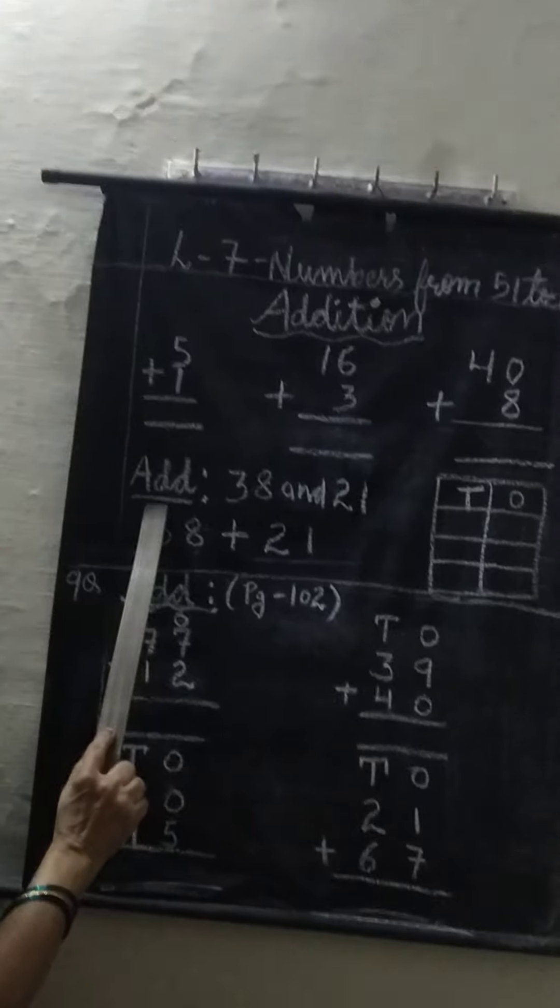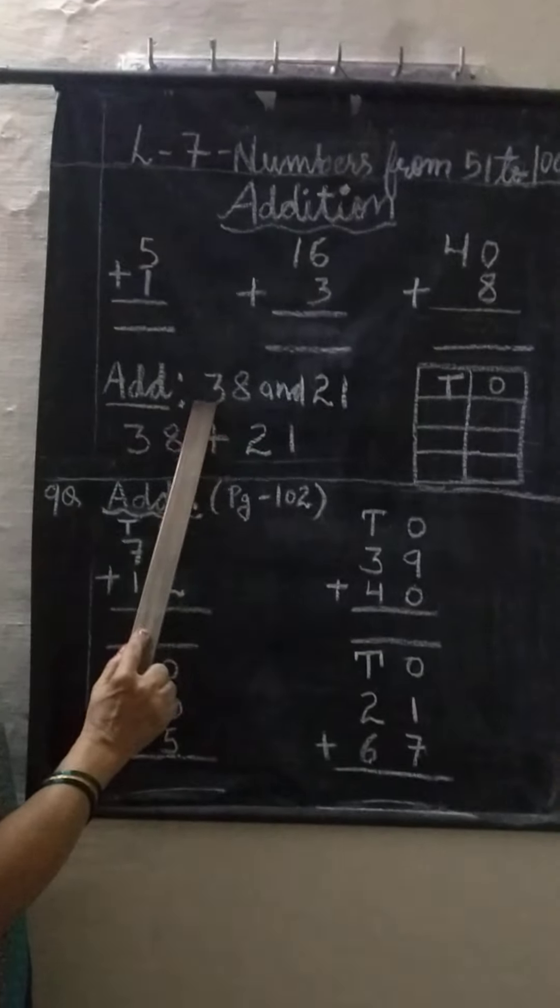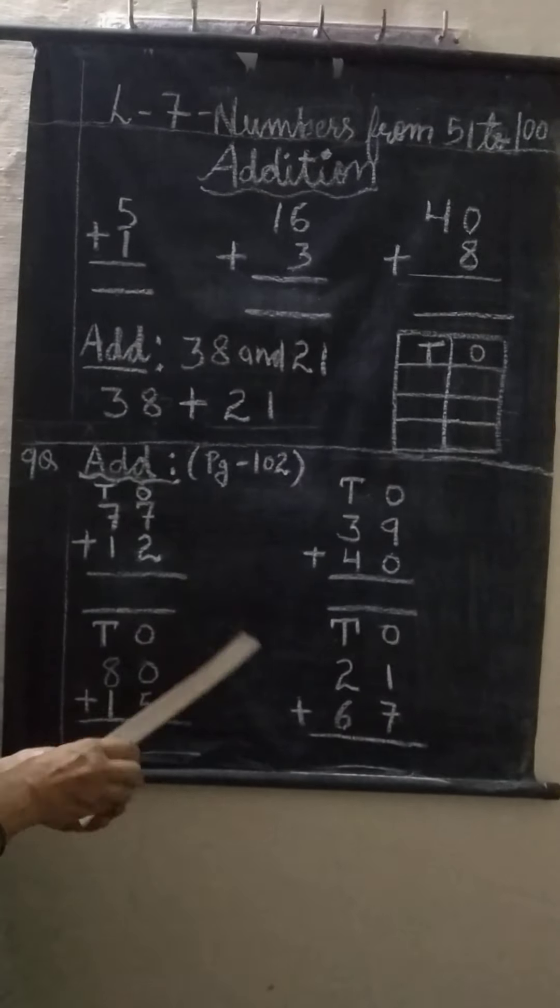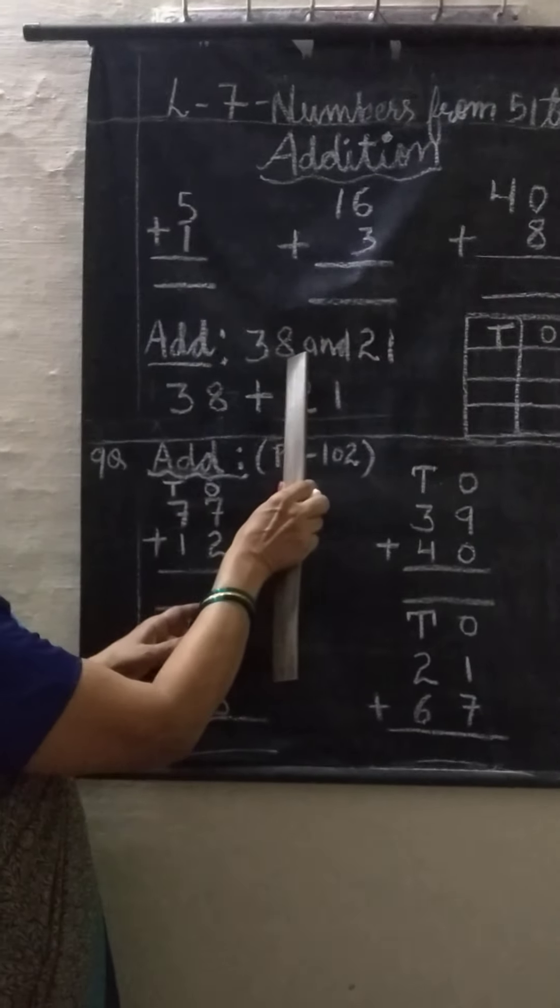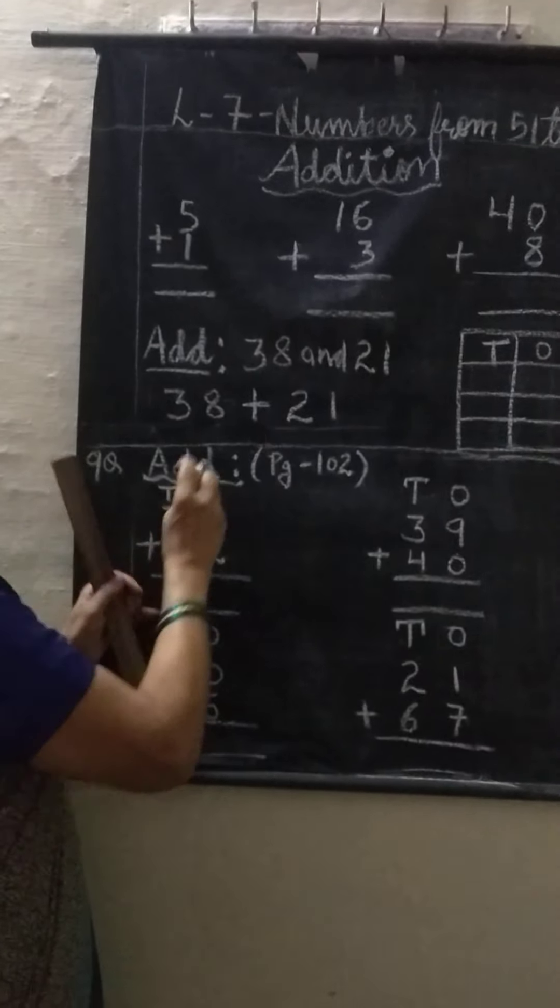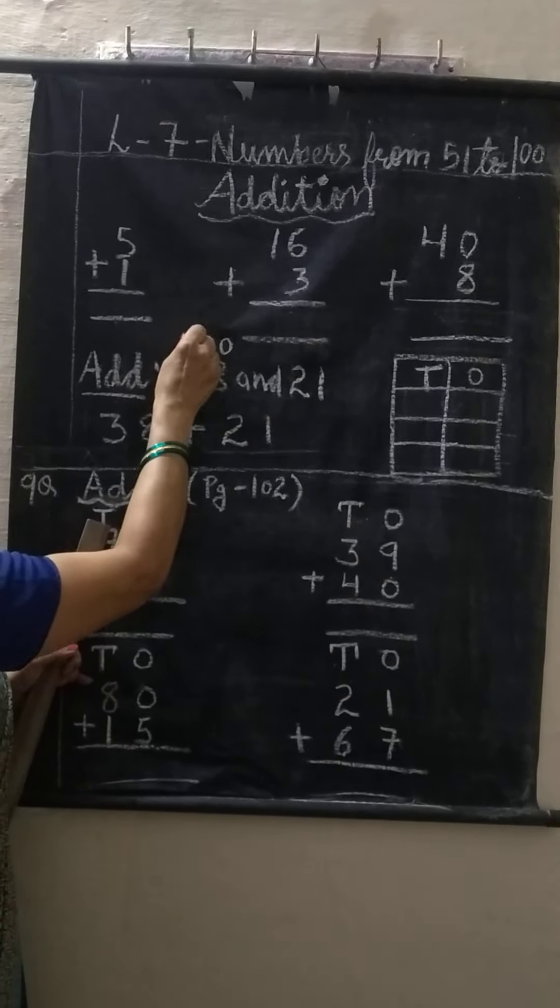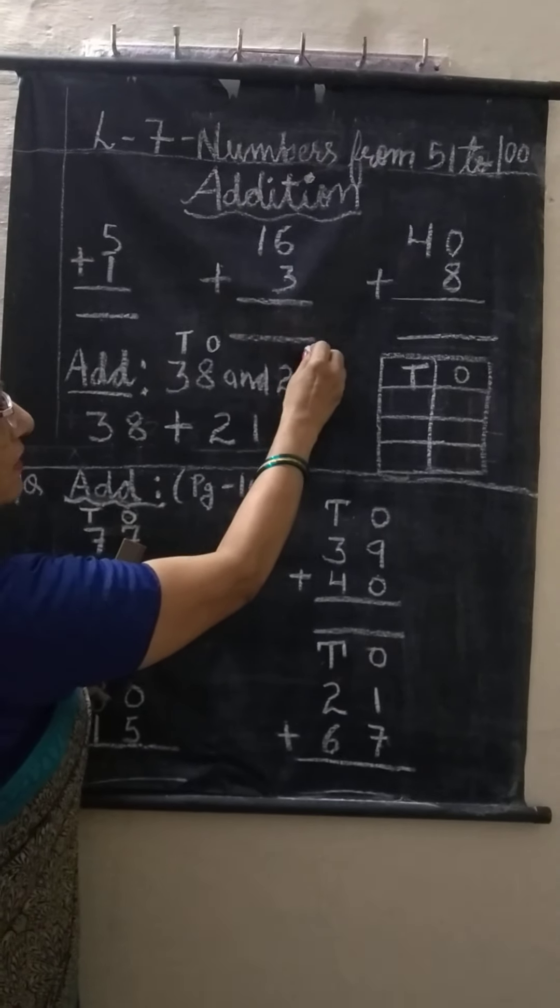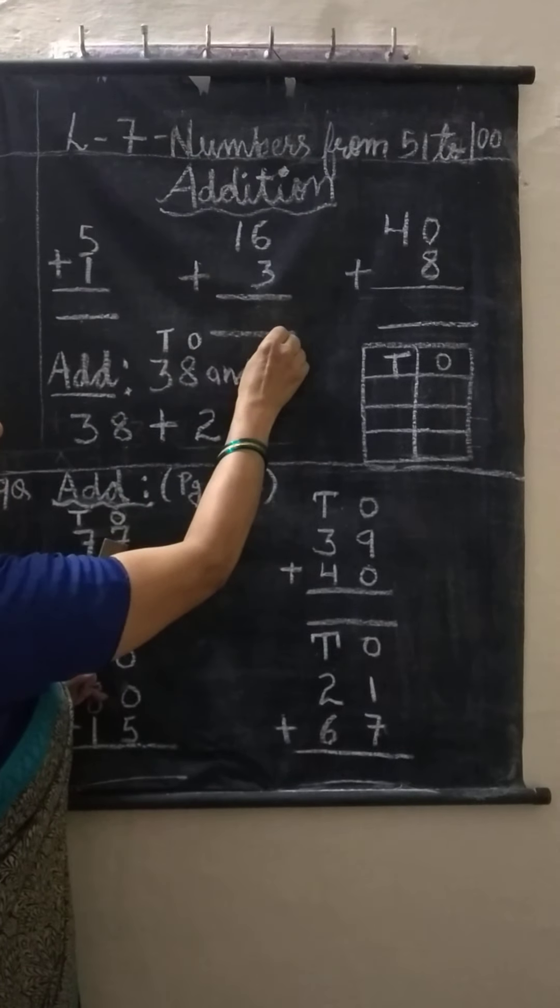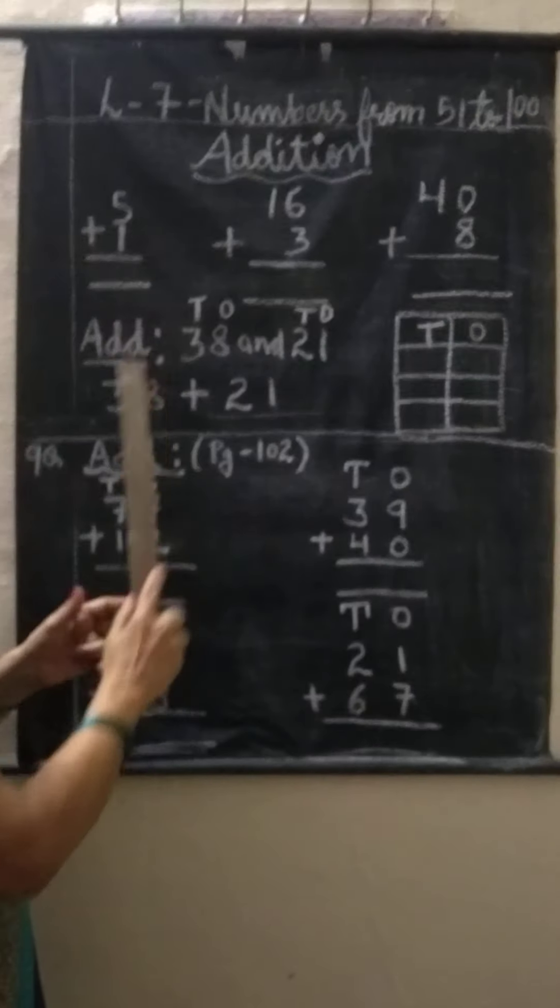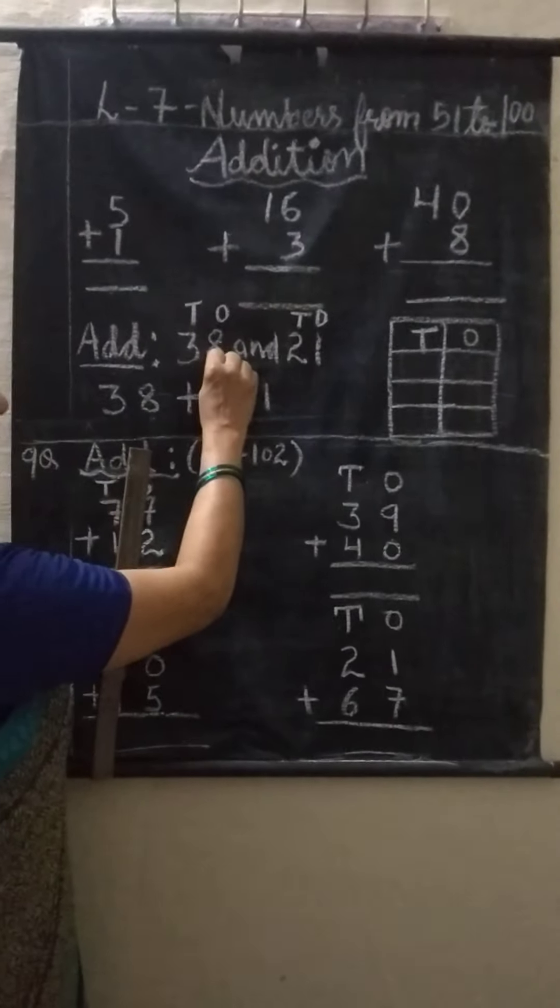Now in lesson number 7 we will do the addition of 2-digit numbers. 2-digit means 2 numbers are there. This is at ones place. Now 8 is at ones place and 3 is at tens place, and here also this 1 is at ones place and 2 is at tens place. In 2-digit numbers, add ones with ones and tens with tens.